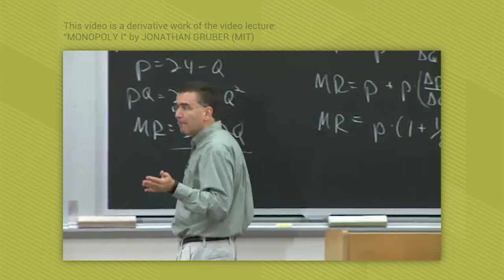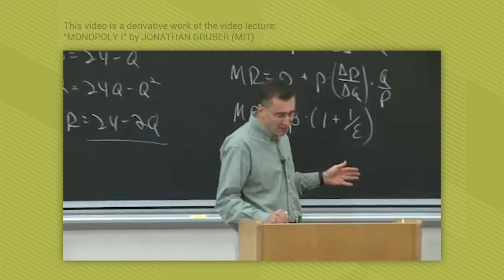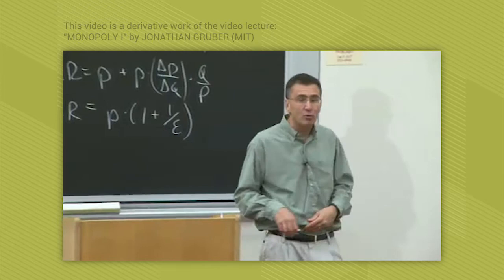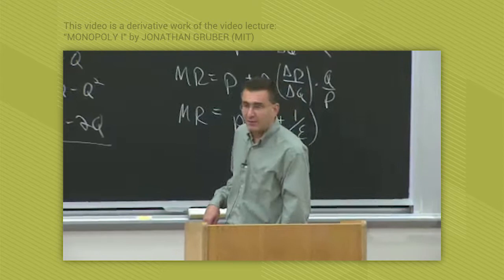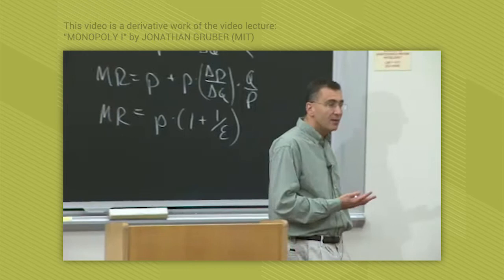As the elasticity of demand gets below minus 1 and approaches 0 from below — and I should clarify, for perfect competition the elasticity is negative infinity, not positive infinity — as the elasticity of demand approaches 0 from below, the marginal revenue becomes negative. For example, if the elasticity of demand equals minus 0.5, then 1 over the elasticity is minus 2, so marginal revenue equals minus P. You lose money.